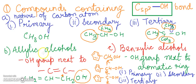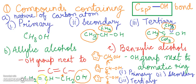In allylic alcohols, the OH functional group is attached next to a carbon-carbon double bond. The example of an allylic alcohol is allyl alcohol. In this example, you can see the allylic carbon — it has the OH group attached and also a double bond attached to the carbon next to it. This is the example of allylic alcohol.